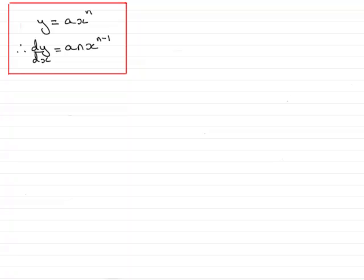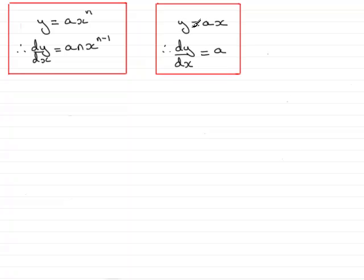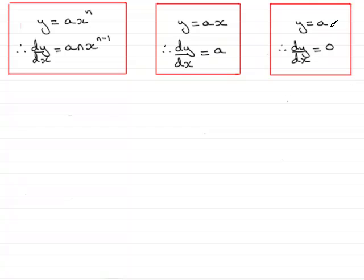Following this idea, if you have terms of the form y equals Ax, then dy/dx turns out to be A. So if y equals 5x, dy/dx would be 5. If y equals 3x, dy/dx would be 3. And if you have a constant, dy/dx turns out to be 0. If y equals 3 fifths or y equals 7, dy/dx would be 0. These results all stem from the main result. If you want proof of these, I will show you at the end of this video.